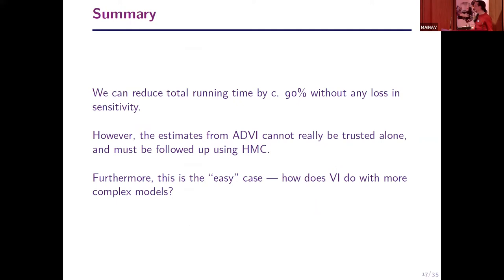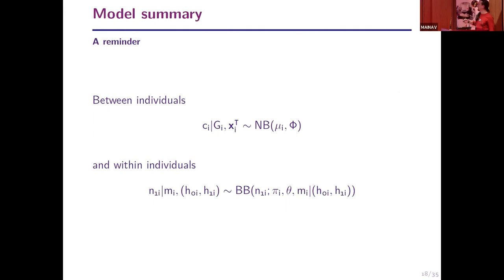There are downsides: the ADVI estimates can't be trusted alone and must be followed up with HMC. In some cases results are way off, with allelic fold changes of around 5 which are totally unbelievable. This was also the easy case with known genotypes. The full baseQTL model combines a negative binomial between-individual component and a beta binomial within-individual component, with known genotypes and haplotypes from high-quality genotyping data.